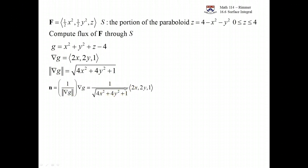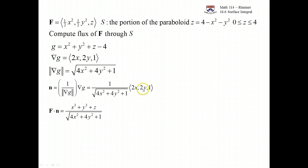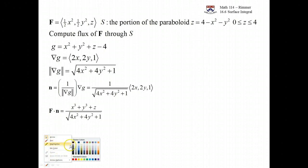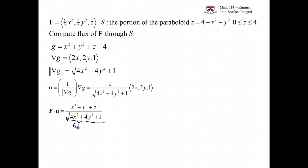We take F and dot it with n. The halves cancel out, giving us x cubed plus y cubed plus z, all over the square root of 4x squared plus 4y squared plus 1. This is the function G of x, y, z that we're integrating over — it's the integrand in the surface integral.